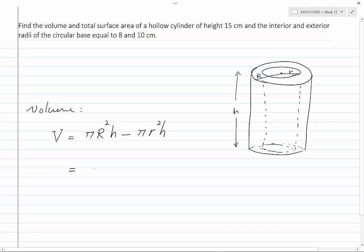I can write this as pi h times capital R squared minus small r squared. I can plug in the values that I have: that would give me pi times 15 times 10 squared minus 8 squared. And this is equal to 540 pi, which is approximately 5,330 centimeters cubed.